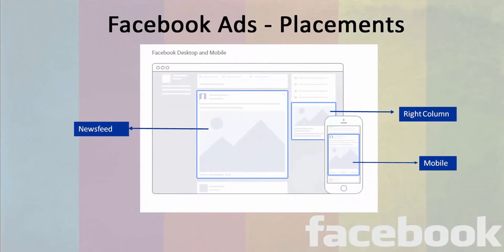Now let's talk about the different placements of these ads on Facebook. There are three different placement options available for Facebook ads. Two options are for the desktop version of Facebook, and one for the mobile version.